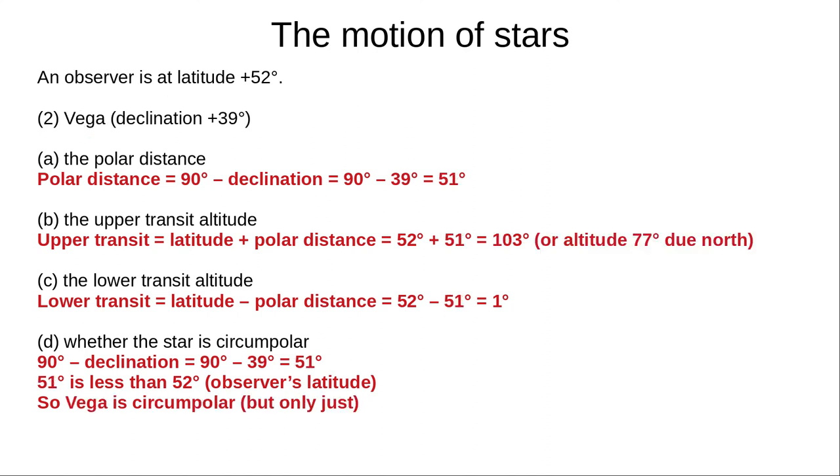For Vega, polar distance is 90 degrees minus 39 degrees equals 51 degrees. Upper transit is 52 degrees plus 51 degrees equals 103 degrees from south, which is the same as saying 77 degrees due north. Lower transit is 52 degrees minus 51 degrees equals 1 degree. Because 90 degrees minus 39 degrees equals 51 degrees, which is less than 52 degrees, Vega is circumpolar. Alternatively, just note that the lower transit is positive. In other words, the star's lowest point is above the horizon.